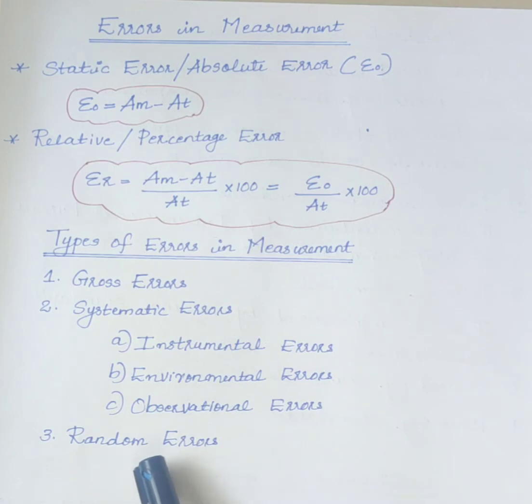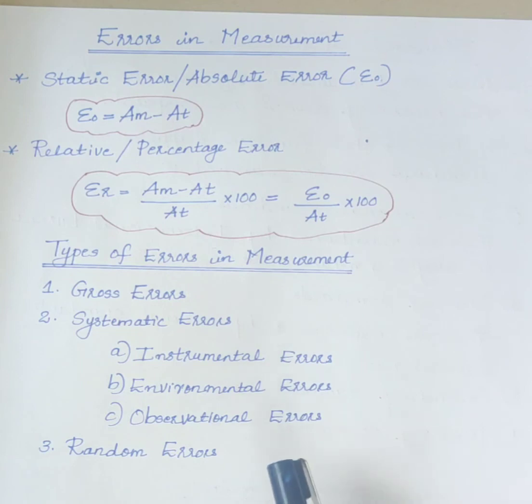Last one is random errors. As the name suggests, no specific reason can be assigned and precaution could be taken to avoid these errors. The effect of random errors is minimized by measuring the given quantity many times under the same conditions and calculating the arithmetical mean of the values obtained. Thank you.